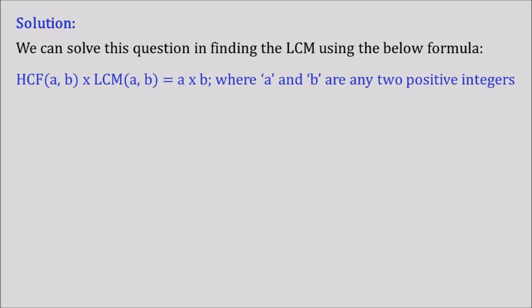So let's look into the formula. The formula says that HCF of a and b into LCM of a and b is equal to a into b, where a and b are any two positive integers. That means if we know the value of a and b, then we could easily determine the other missing value or we can calculate the values accordingly of HCF or LCM.